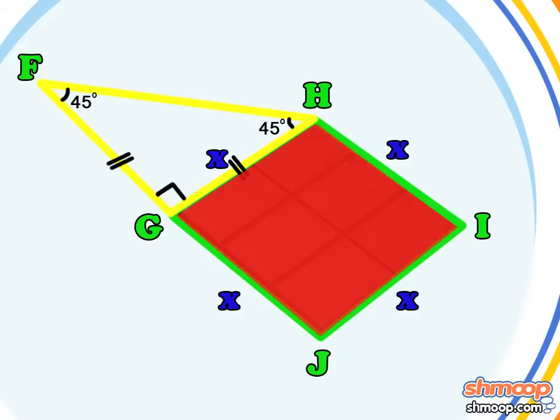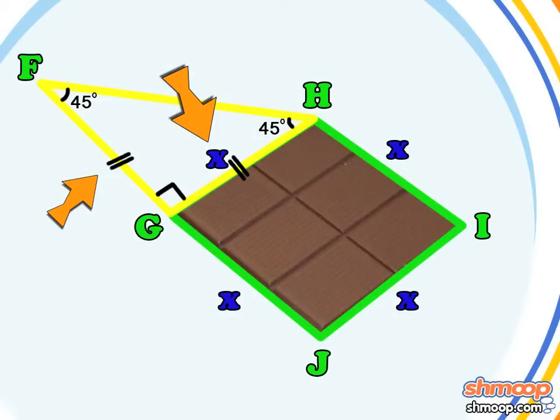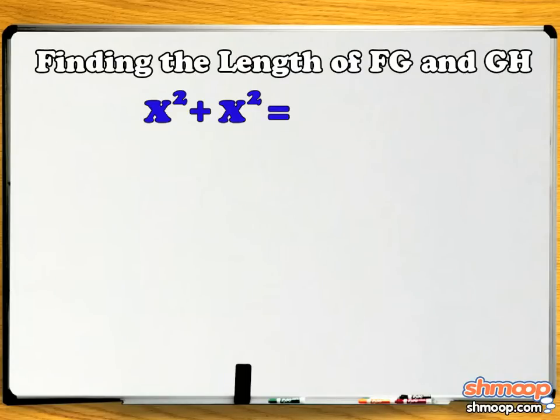This means that the area of the triangle FGH is one-half X-squared. To solve for the side lengths FG and GH, X, we can use our friend the Pythagorean Theorem. The Pythagorean Theorem tells us that X-squared plus X-squared, in this case, equals 6 square root of 2 squared.